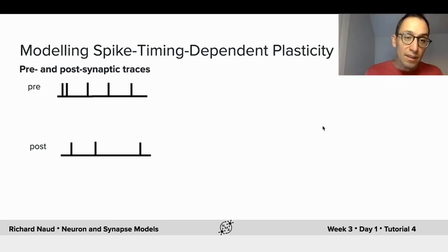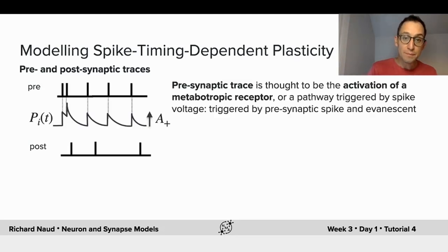The approach that is typically taken is to use traces, pre-synaptic traces and post-synaptic traces. This is thought to reflect that many processes in biology are involving a sudden change followed by a linear dynamics that give you the trace. For instance, a pre-synaptic trace is thought to be an activation of a metabotropic receptor on the post-synaptic membrane, such that whenever a pre-synaptic spike arrives, the trace for that particular neuron i increases and then decays with linear dynamics to its stationary point. We can control the amplitude of that increase with a parameter A+.